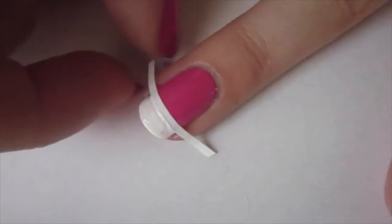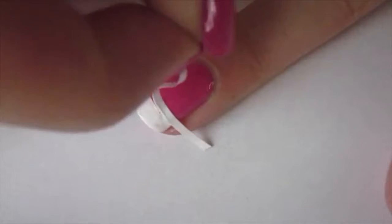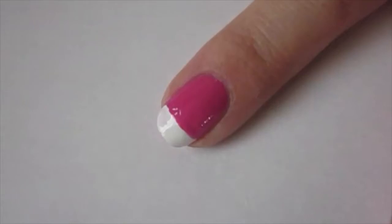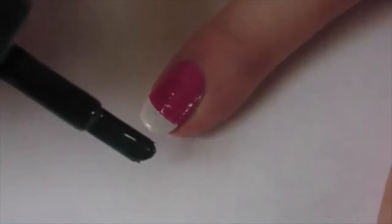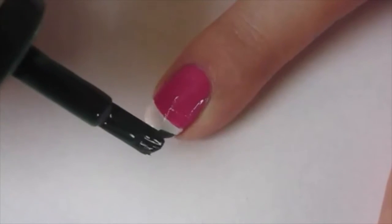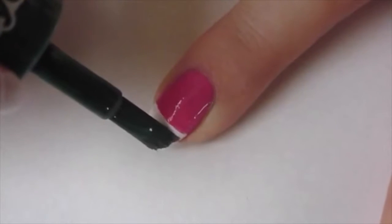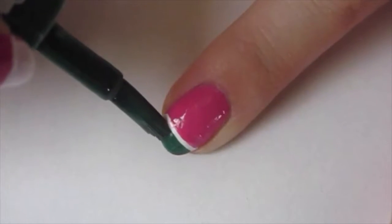While this is still wet, I peeled back the vinyl. Next, we're going to carefully go in with a dark green polish, making sure to leave a little bit of the white still exposed.